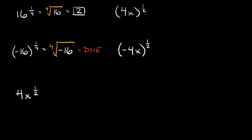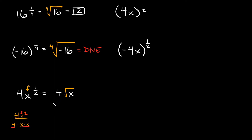Now here we have a variable: 4x raised to the one-half power. Since the 4 and x are not in parentheses, the exponent only gets applied to the x. Think of it like 4x squared — the exponent only applies to x, not the 4. So x^(1/2) is the same as the square root of x, and the 4 stays out front. Your answer is 4 times the square root of x.